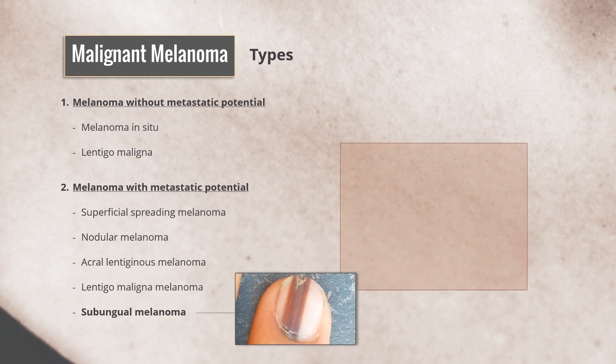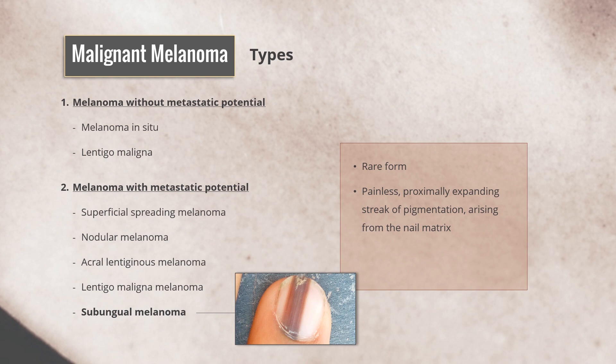Subungual melanoma is a rare form of melanoma. It may present as a painless, proximally expanding streak of pigmentation arising from the nail matrix, and progresses to nail dystrophy and involvement of the adjacent nail fold.